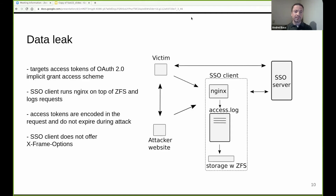We now describe our remote data leak scenario, which contains four actors: a victim browser, a single sign-on server, an SSO client, and an attacker-controlled website. The attacker targets access tokens from the OAuth implicit grant access scheme and assumes that the token does not expire for the duration of the attack. The SSO client runs NGINX and logs the requests of the victim and the attacker. The requests include the access token in the URL, so they are written to the log file, which is located on ZFS with deduplication enabled. We also assume that the SSO client does not offer XFO headers.